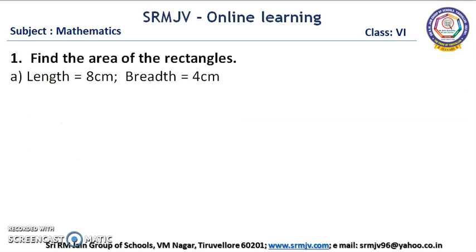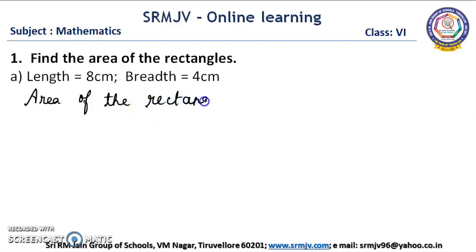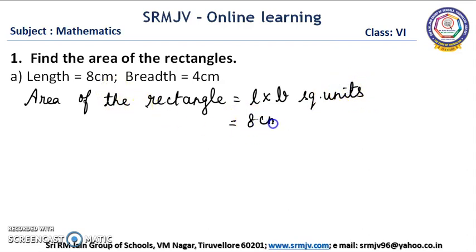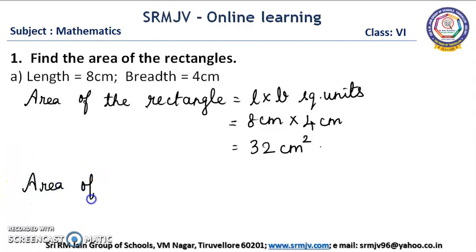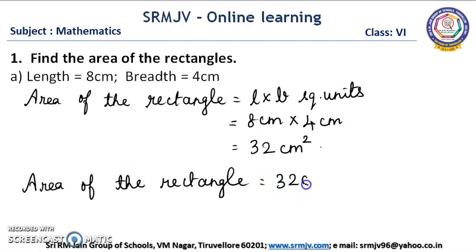Let us start the exercise. The first question is: find the area of the rectangle. Length is 8 cm, breadth is 4 cm. By using the formula, area of the rectangle is equal to length into breadth square units. Here length is 8 cm into breadth 4 cm. 8 fours are 32, cm into cm is cm square. So the area of the rectangle is equal to 32 cm square.